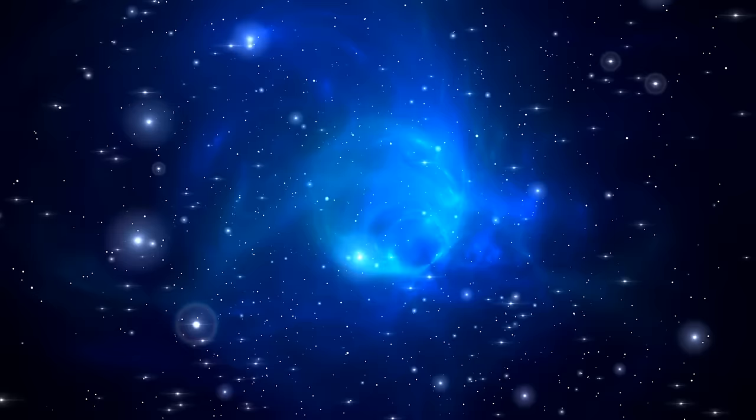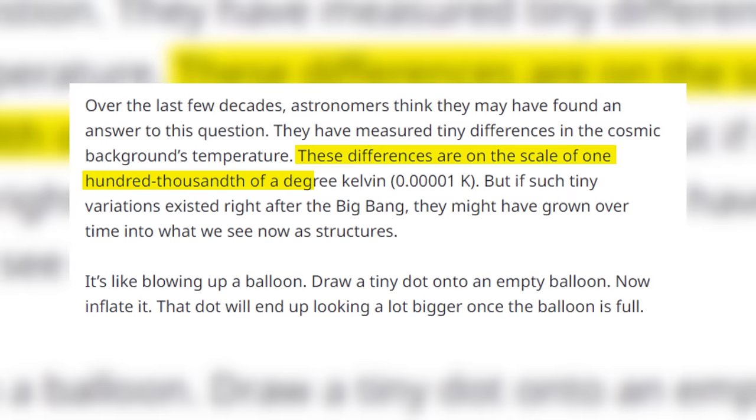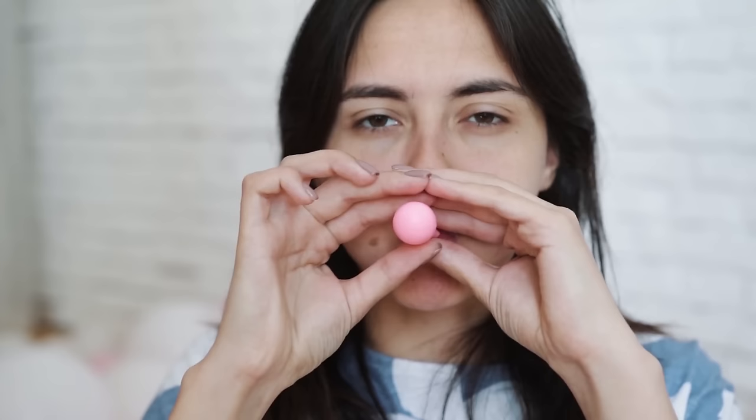Over the last few decades, astronomers think they may have found an answer to this question. They have measured tiny differences in the cosmic background's temperature. These differences are on the scale of one hundred thousandth of a degree Kelvin, 0.00001K. But if such tiny variations existed right after the Big Bang, they might have grown over time into what we see now as structures.